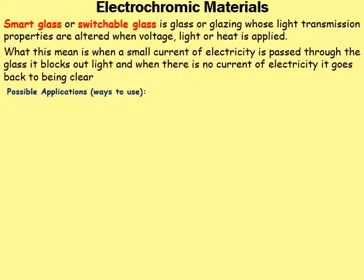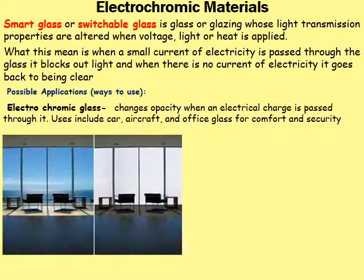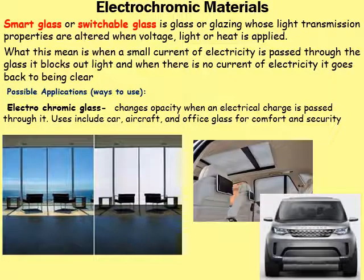It's probably easier to think about it in its real application. Here's an example of electrochromic glass, which changes opacity when an electrical charge is passed through it. This office glass example shows it is clear when electricity is applied, and hazes over to block light out when switched off. This is also used in car windows. It's not very common because it is very expensive, but it will likely take off over the next five to ten years as technology becomes cheaper.